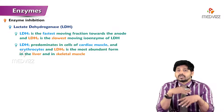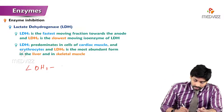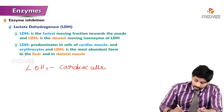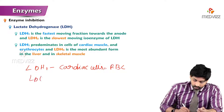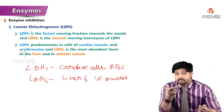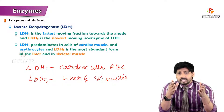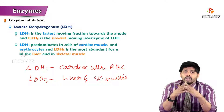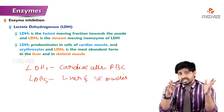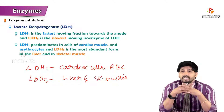LDH1 predominates in cardiac muscle cells and RBCs. LDH5 is found in liver and skeletal muscle. Their function is the same - both catalyze the reversible conversion of pyruvate to lactate - but their locations differ. LDH1 is involved in cardiac muscles and erythrocytes, while LDH5 is involved in liver and skeletal muscles.